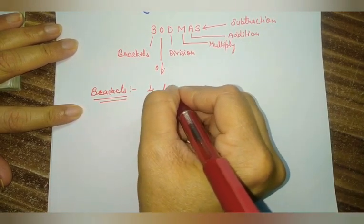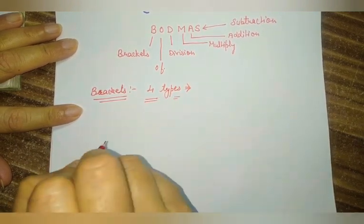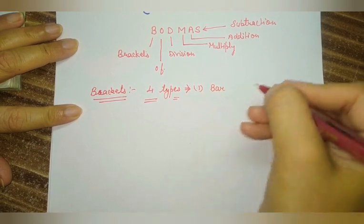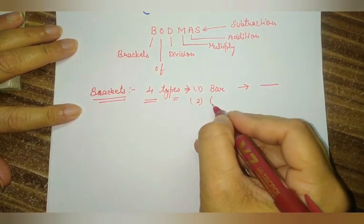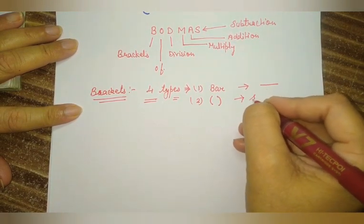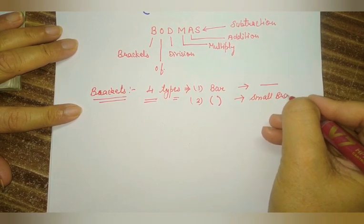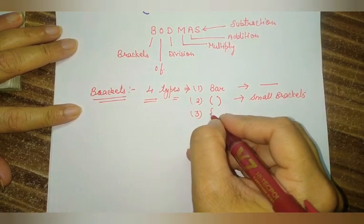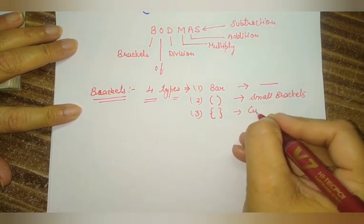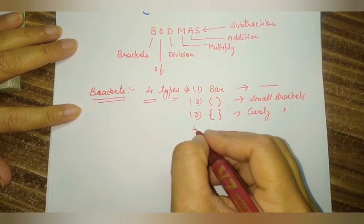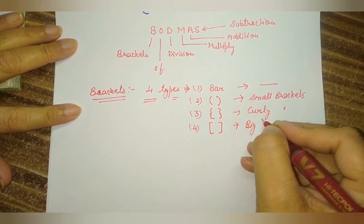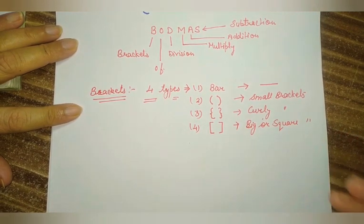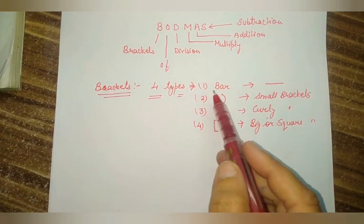There are four types of brackets, and we solve these brackets according to their sequence only. The first is Bar — we use a bar like this over the numbers, so first of all if a bar is given in the equation, we solve the bar first. Then after, we solve the second bracket, which is the Small bracket — another name is Common bracket. The third one is the Curly bracket. And at the last is the Square bracket, also called the Big bracket.